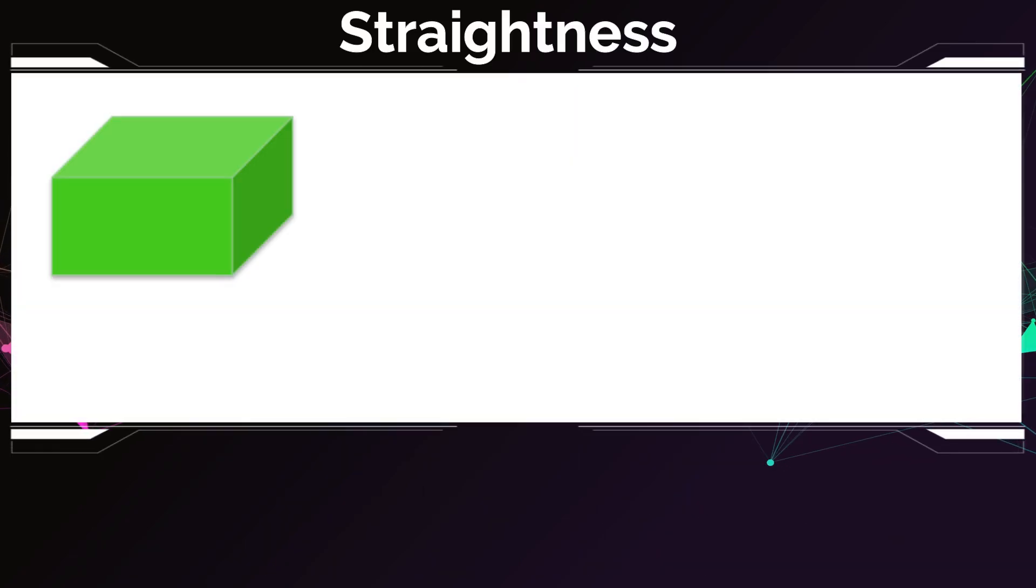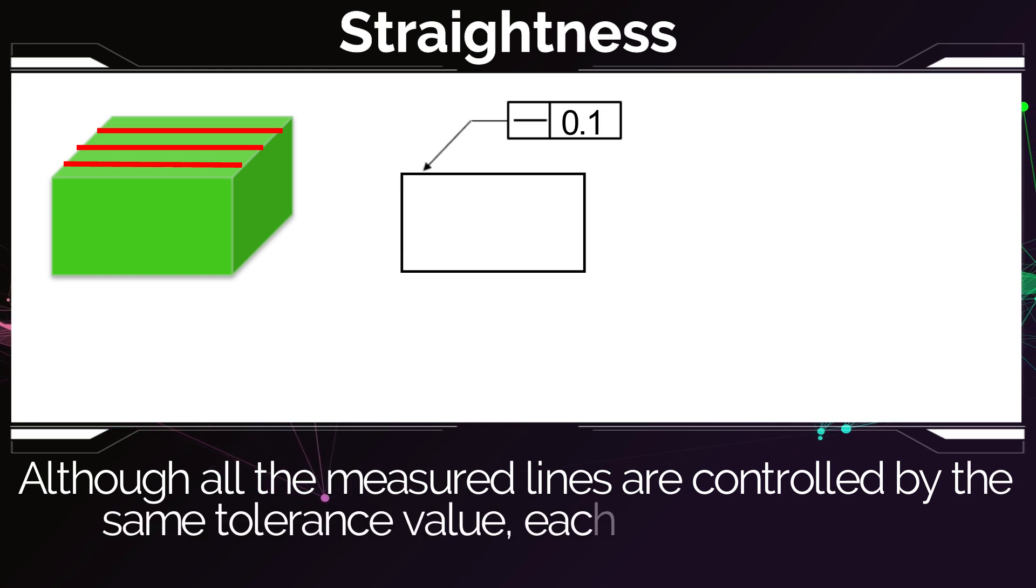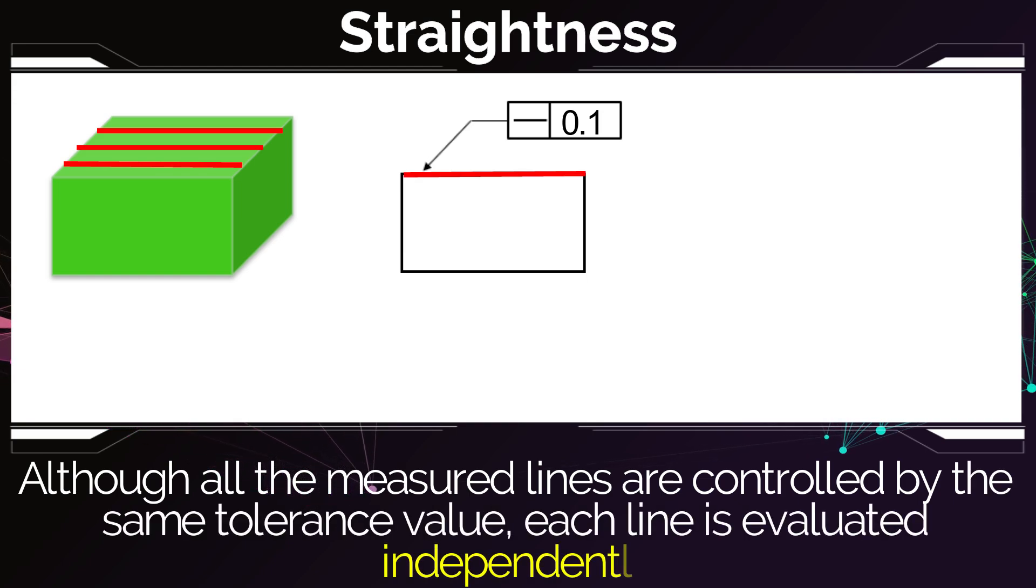One more thing is that these different lines, although they are controlled by the same feature control frame that is pointing at this one line, and although they all have to be straight, they're all independent of each other. They're all evaluated independently of each other,